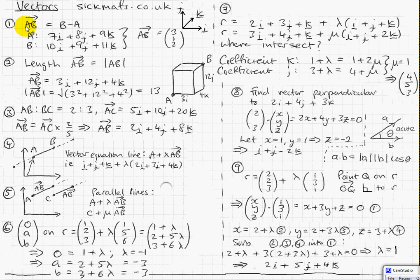Let's go through a bit of notation. A to B — if I want to get from A to B, that's actually a definition of a vector, because a vector is a certain direction and a certain distance. The way you calculate A to B is you do the position of B take away the position of A.